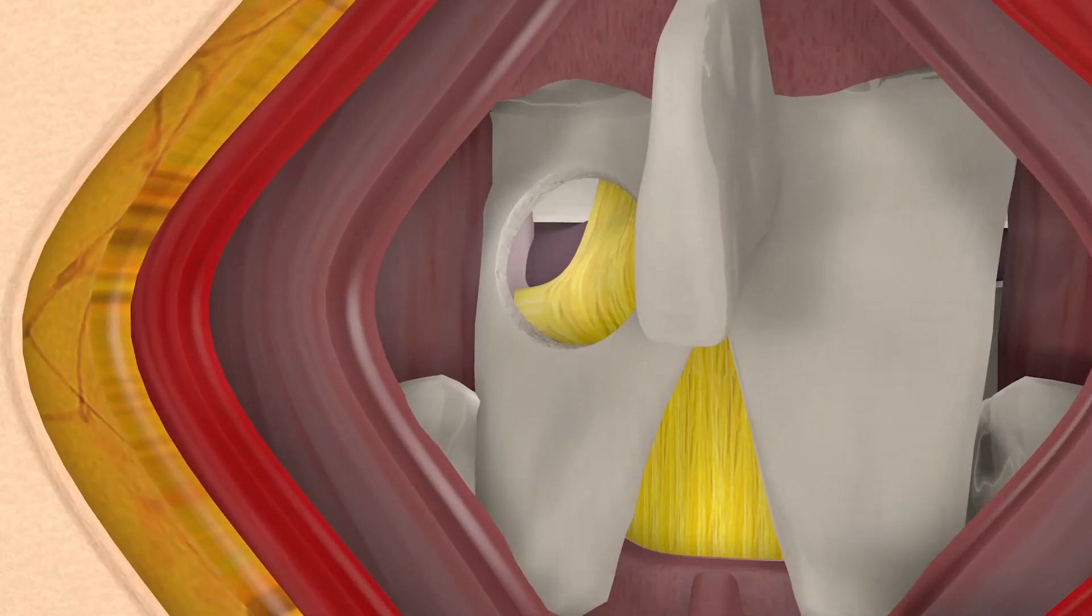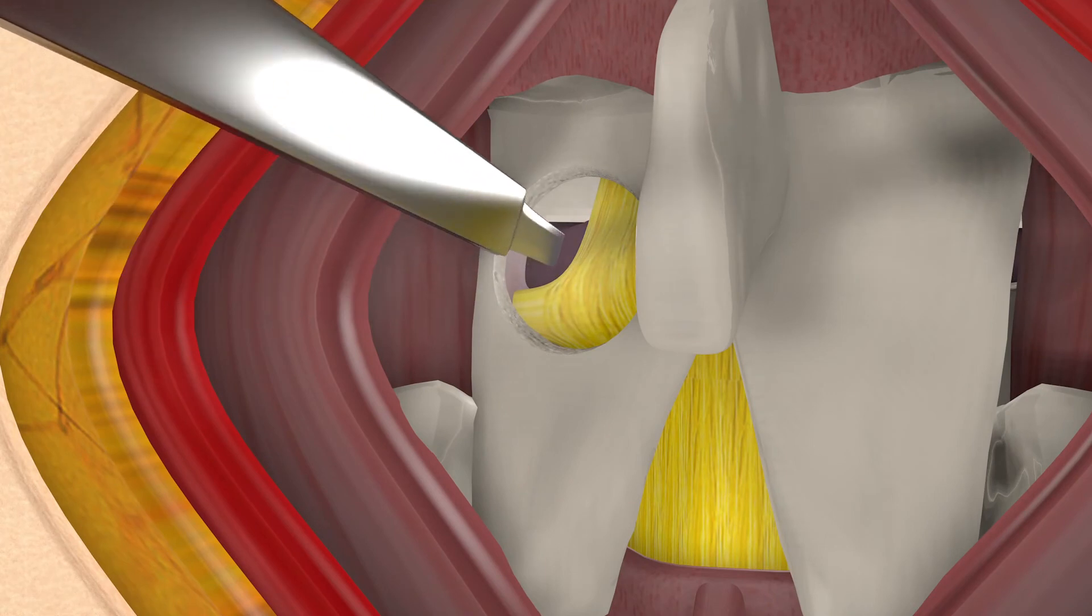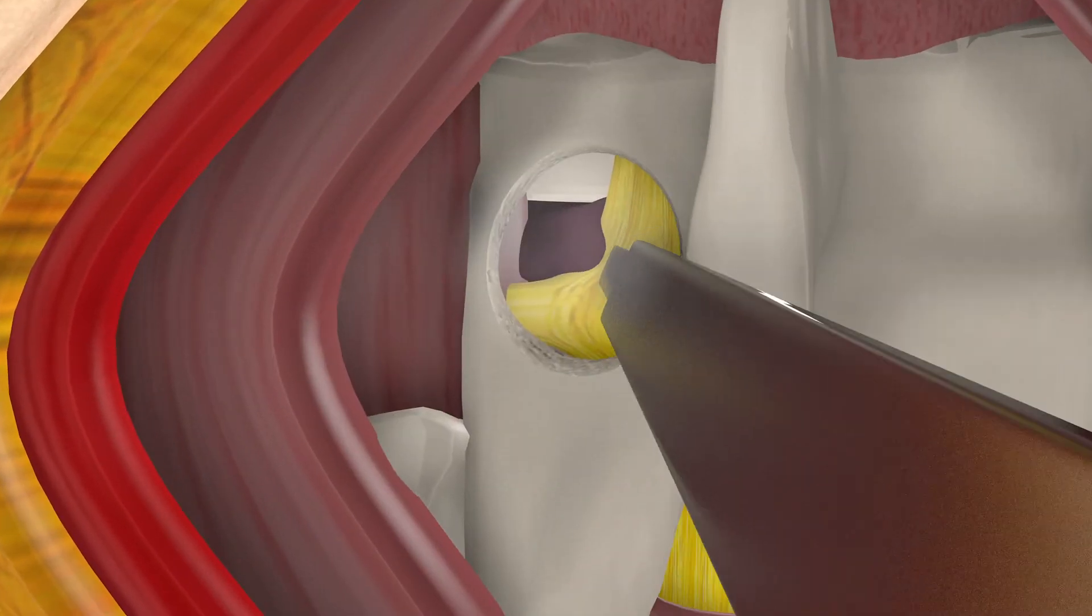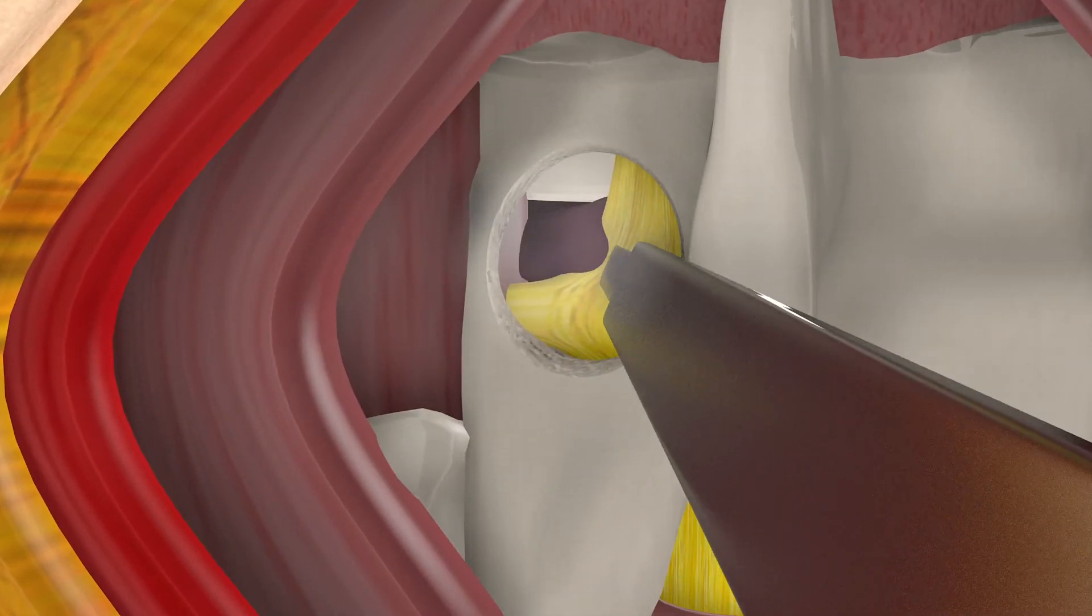After a hole has been made, the surgeon will investigate the spinal cord area, feeling and looking for the herniated disc capsule.